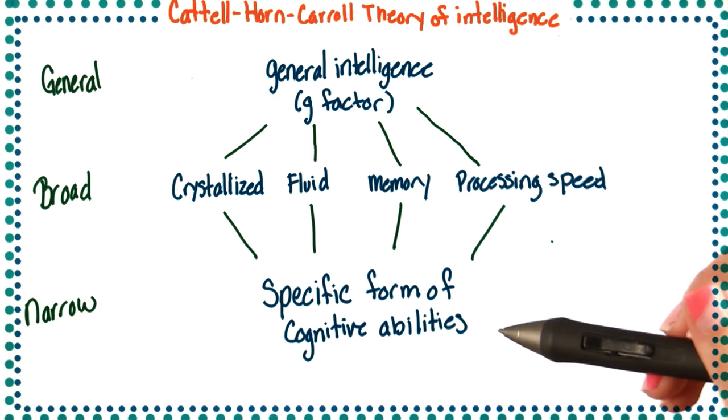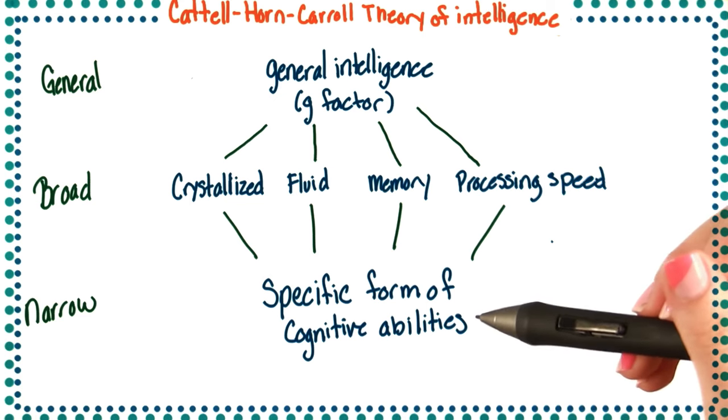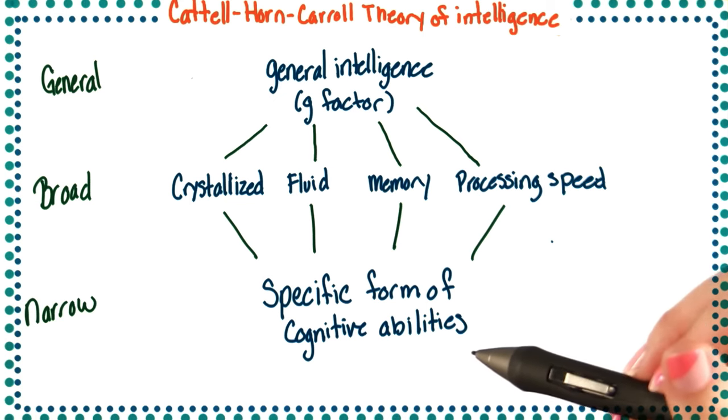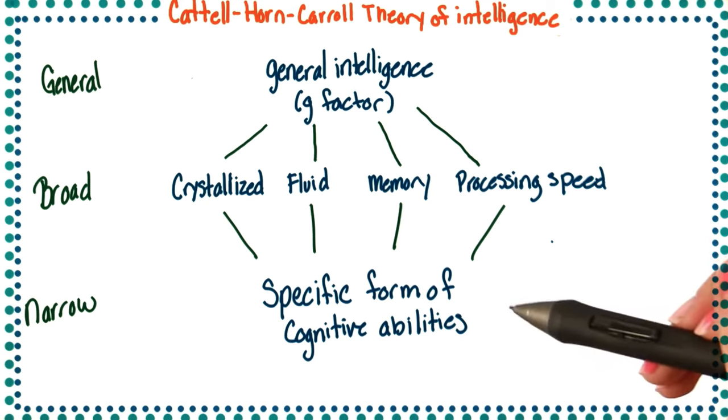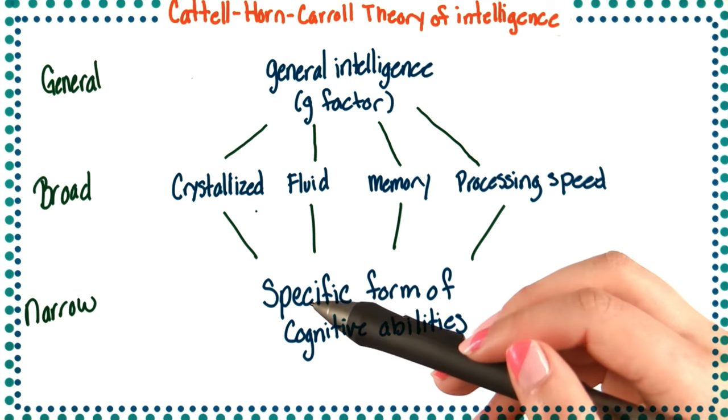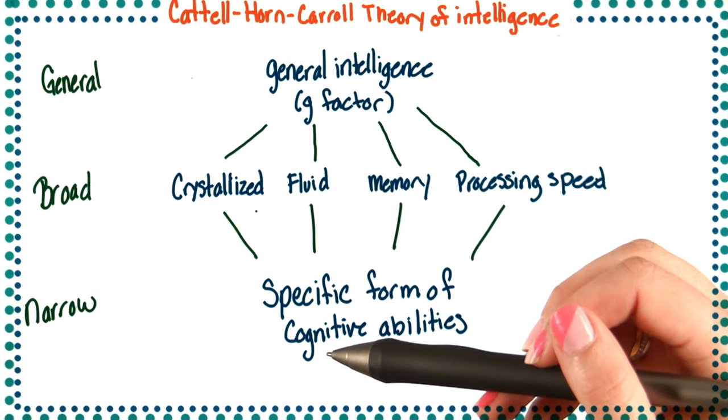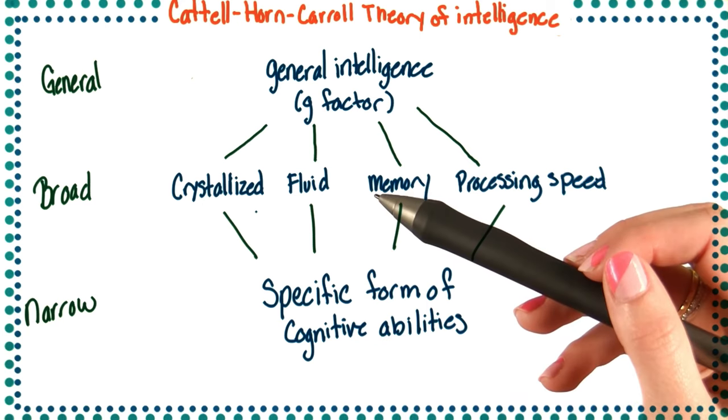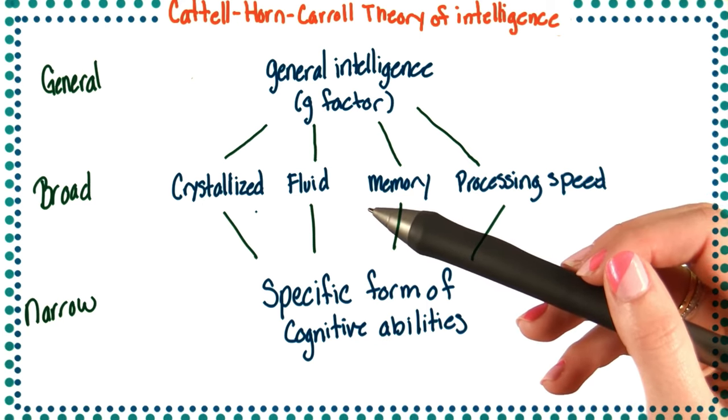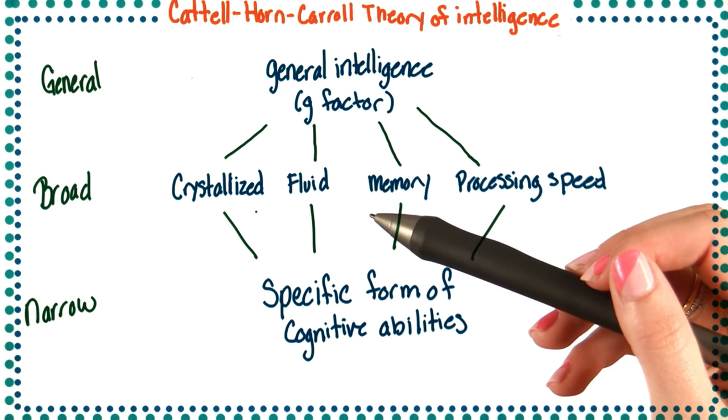And finally, the last level is the narrow level. This consists of specific forms of cognitive abilities from each of the broader domains. For example, with crystallized intelligence, it would be things like reading, spelling, or language comprehension. And for fluid intelligence, it would be things like speed of reasoning or spatial reasoning.